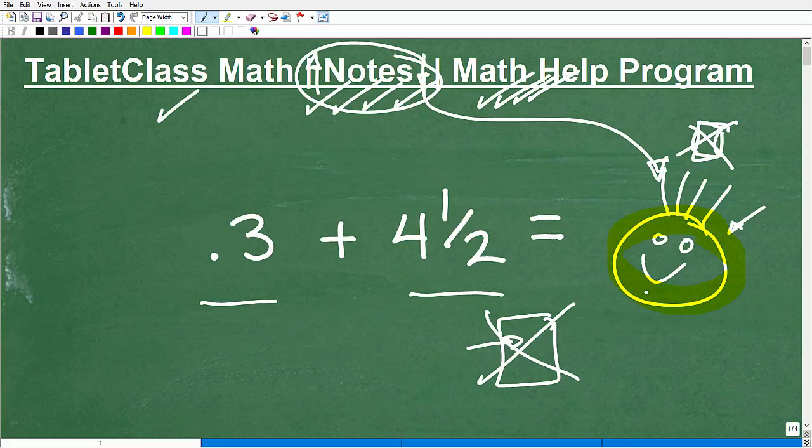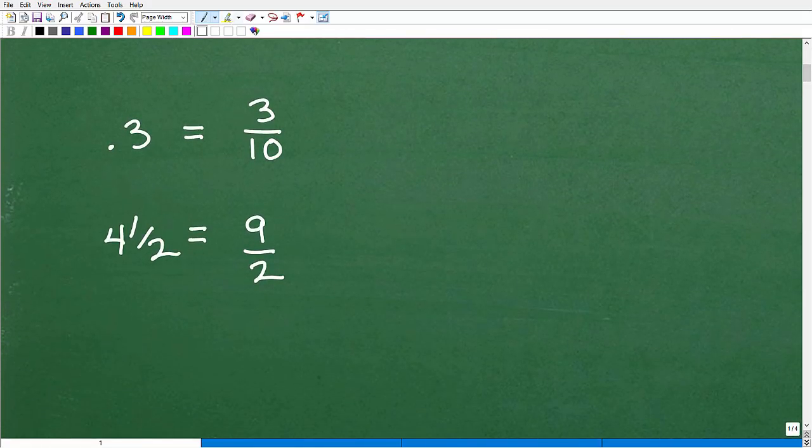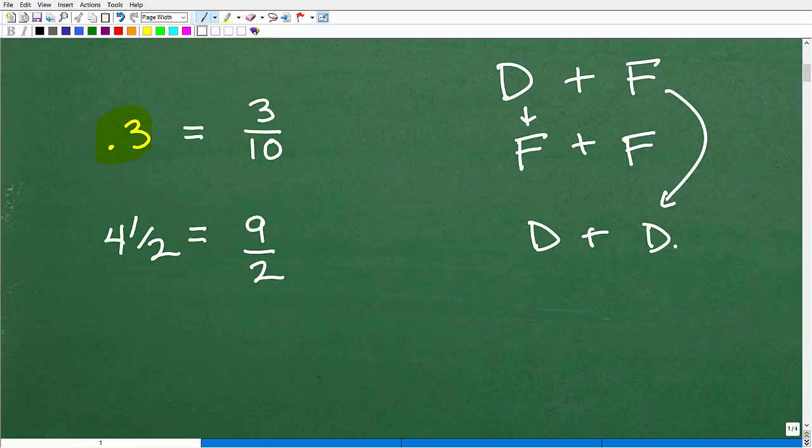Okay, so let's go ahead and tackle this problem. Again, this doesn't have to be scary. We have 0.3 plus 4 and 1 half. We're going to approach this problem in two different ways. As long as you get the right answer, that's what counts. We have a decimal plus a fraction. Either we need to make this decimal into a fraction so we have fraction plus fraction, or take this fraction and make it into a decimal. We're going to do this problem both ways.